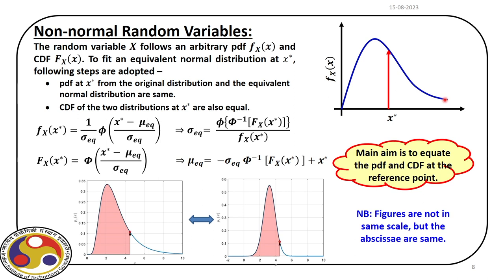If we are at a particular point x-star, then at this point we can design an equivalent normal distribution. For the equivalent normal distribution, we need to evaluate two parameters — mean and standard deviation — using two equations. The first equation is based on the PDF: at the point x-star, we already know the small f_x(x*) that is the PDF or the relative frequency of occurrence, and we equate that with the normal PDF.